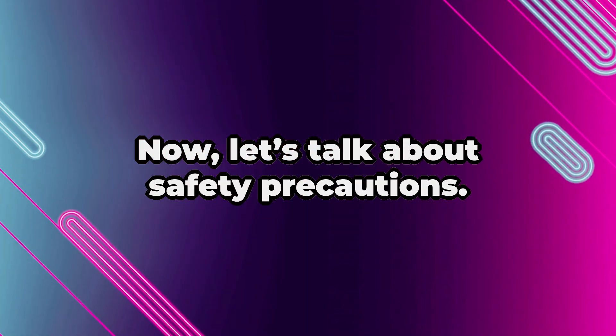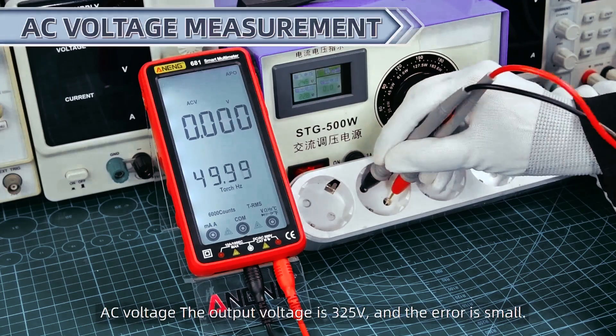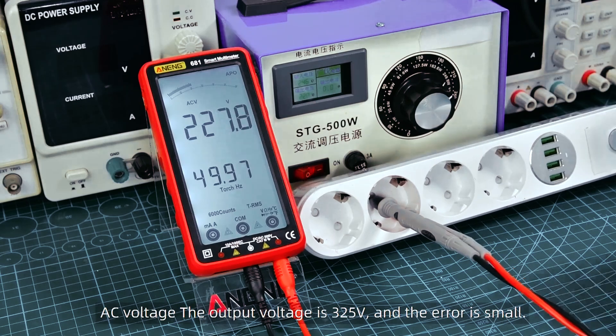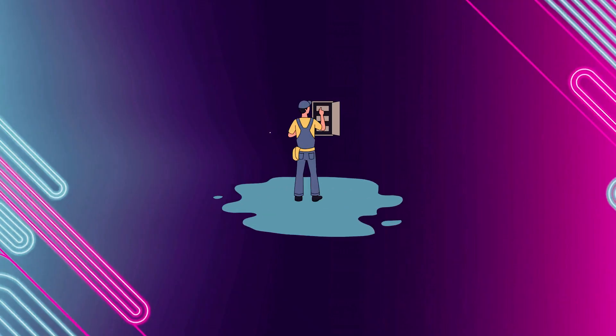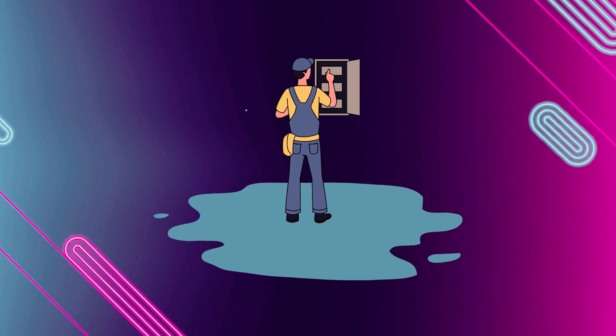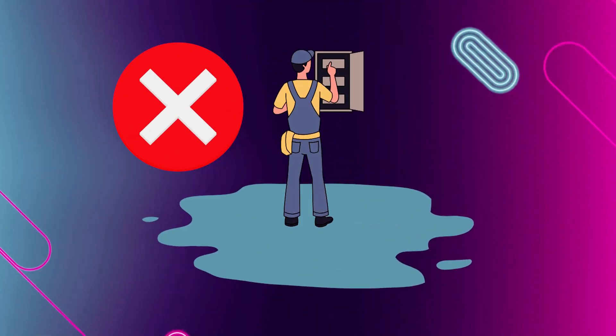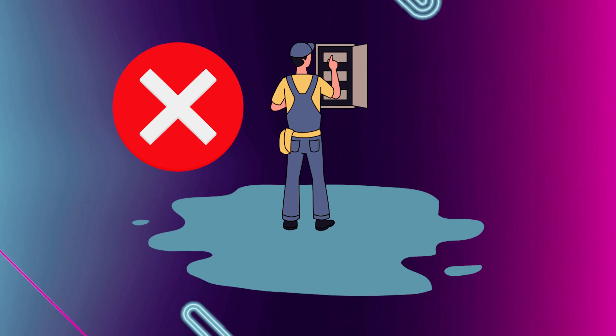Now, let's talk about safety precautions. When testing voltage, it's essential to wear insulated gloves and work in dry conditions. Moisture can increase the risk of electrical shock, so never test voltage in wet areas unless your equipment is rated for it.